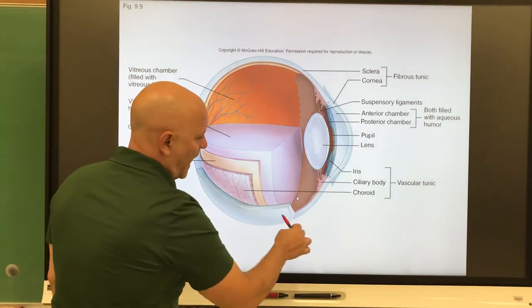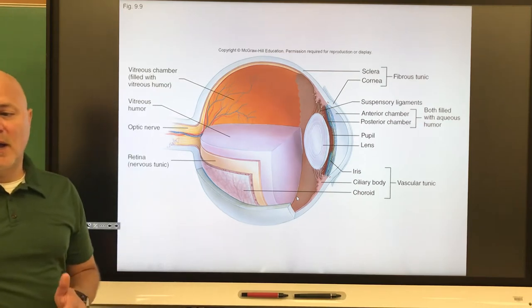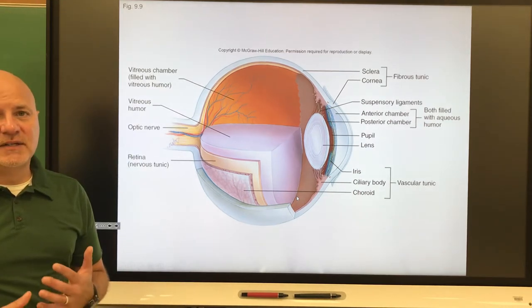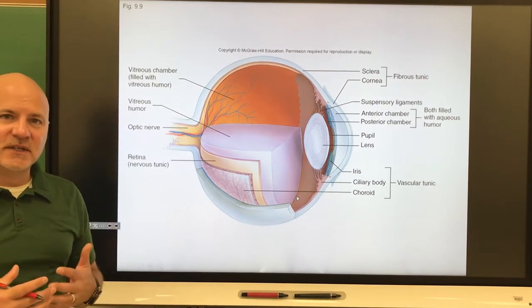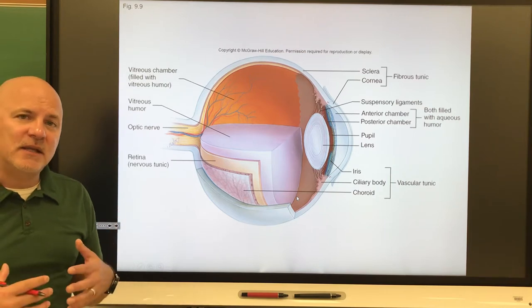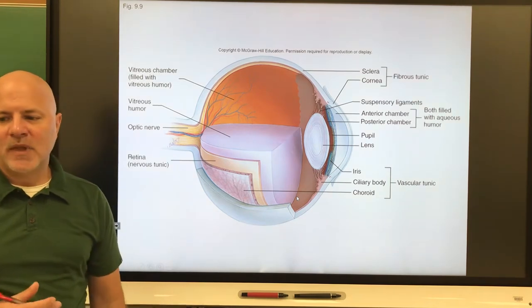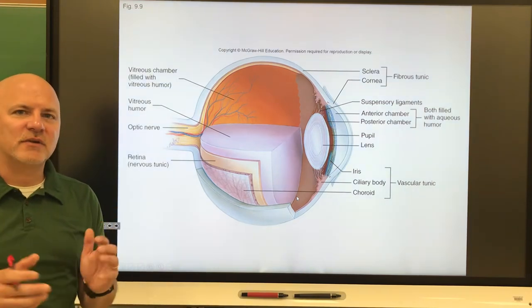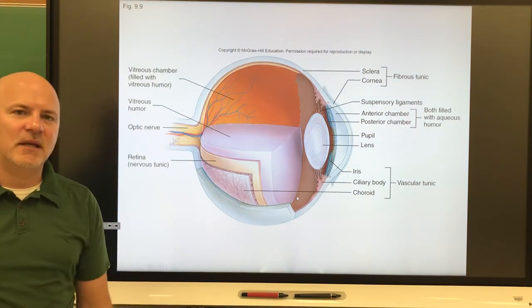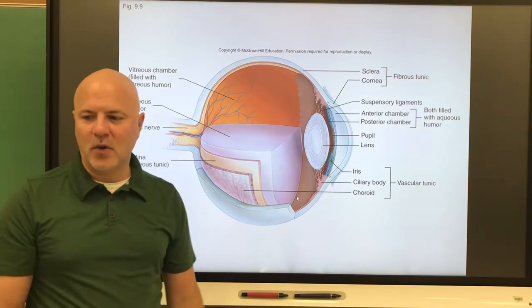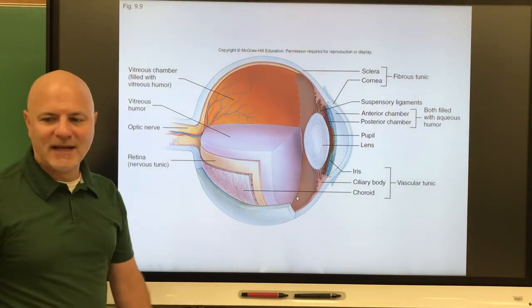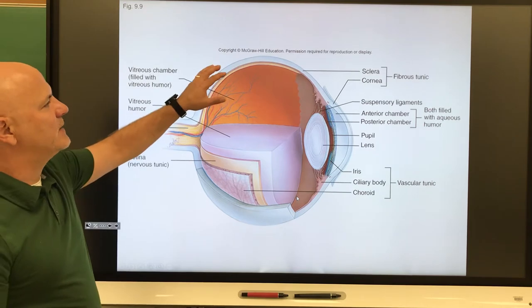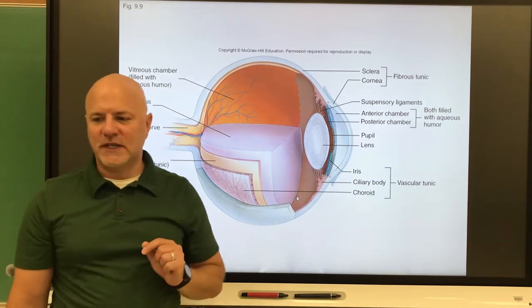The white portion of our eye is called the sclera. It's made of collagenous and elastic fibers. That's what gives it its color. It's going to protect the inner parts of the eye. It is a tough fibrous connective tissue covering. As I mentioned with tough fibrous connective tissue coverings, they protect the inner parts of an organ. It also serves as an attachment site for those extrinsic eye muscles.